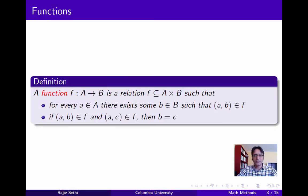Recall that in the last segment we defined a relation from set A to set B as a subset of the Cartesian product of A and B, and we can define a function as a special type of relation. A function from A to B is a subset of the Cartesian product of A and B which satisfies two properties. First, for every element of A there exists some element of B such that the ordered pair (A, B) is in F, and second, if the ordered pairs (A, B) and (A, C) are both in F, then B and C must be the same element.